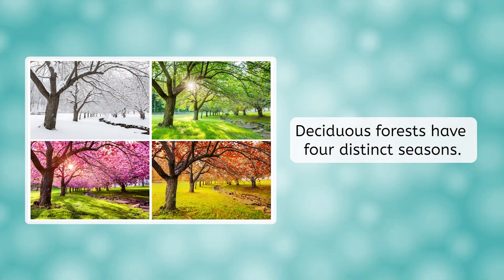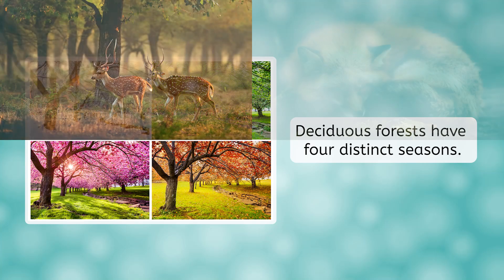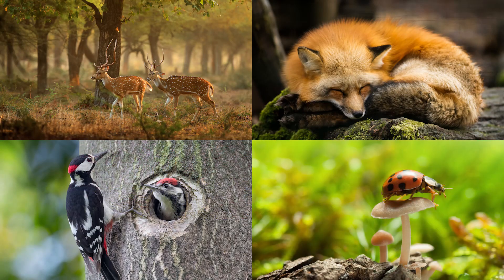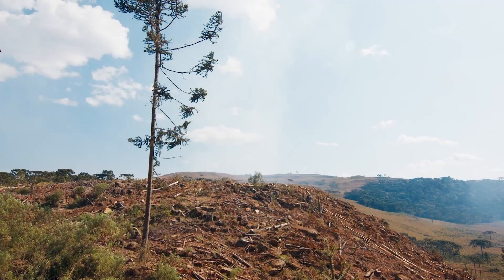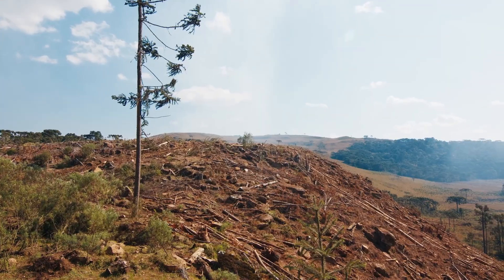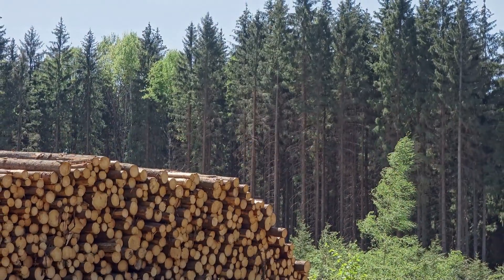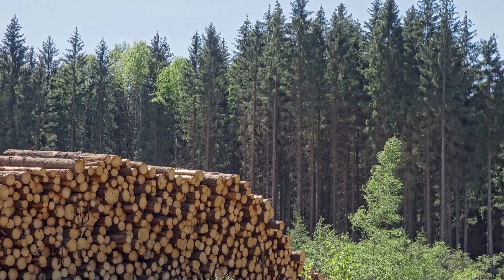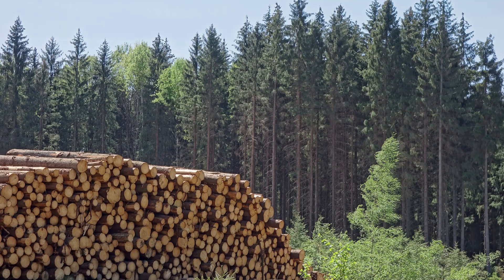There are four very distinct seasons in a deciduous forest and a wide variety of animal species, such as deer, foxes, raccoons, bears, woodpeckers, owls, insects, and butterflies. Deforestation can be a problem here too, so conservation efforts focus on sustainable forestry practices such as selective cutting and replanting. We'll learn more about the responsible use of resources in our sustainability lesson later in this unit.